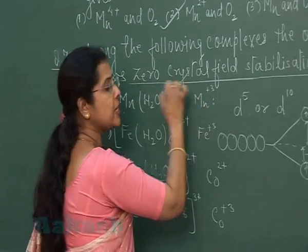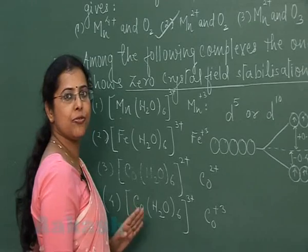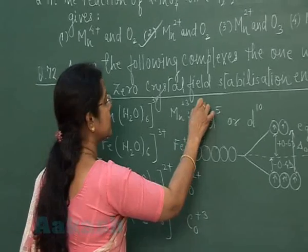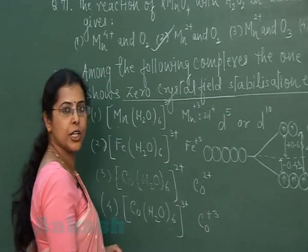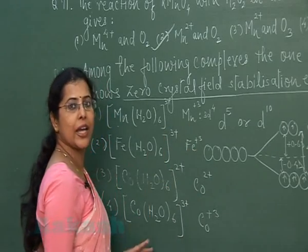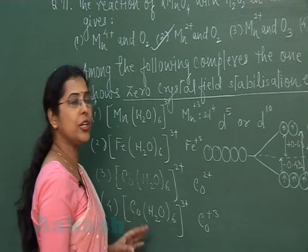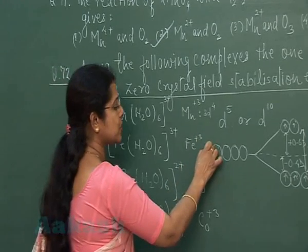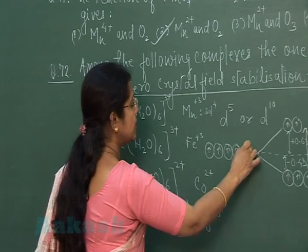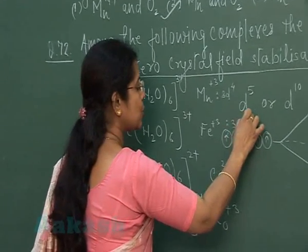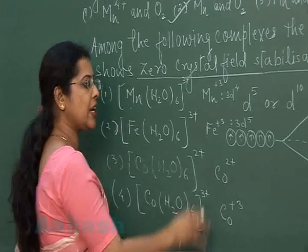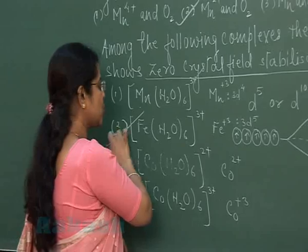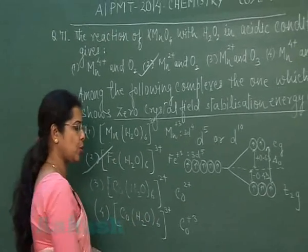Configuration of manganese is 3d5 4s2. It means in +3 oxidation state its configuration will be 3d4. The configuration of iron is 3d6 4s2, and when it is in the +3 state, the configuration becomes 3d5. So this complex is having exactly 5 electrons. So probably this complex will have zero CFSE value.